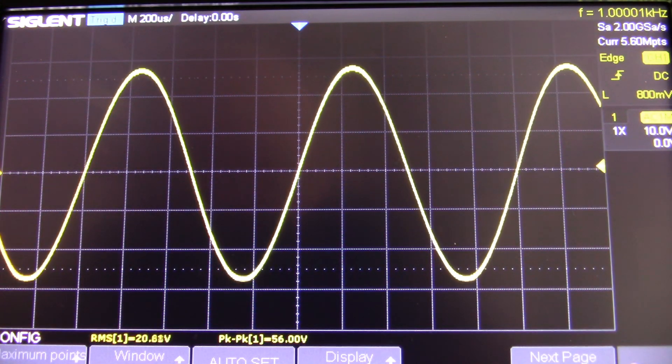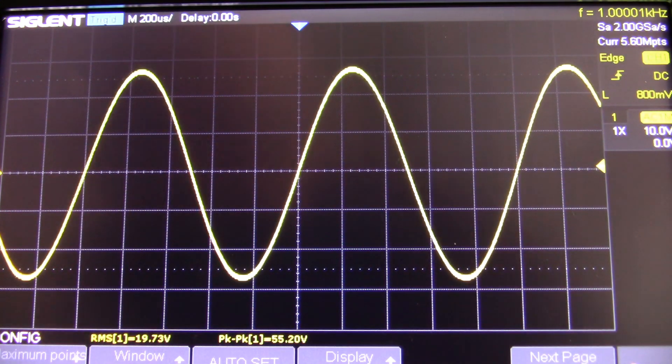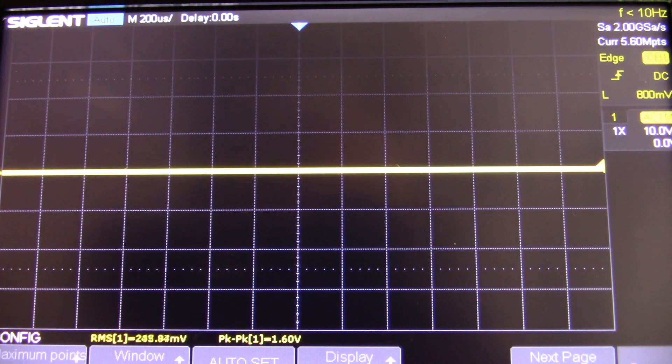So I have to get my measurements pretty quick. So what we do is we take it out of clipping and I get the voltage - 19.73. So 19.73 squared divided by 4 ohms is 97.3 watts.